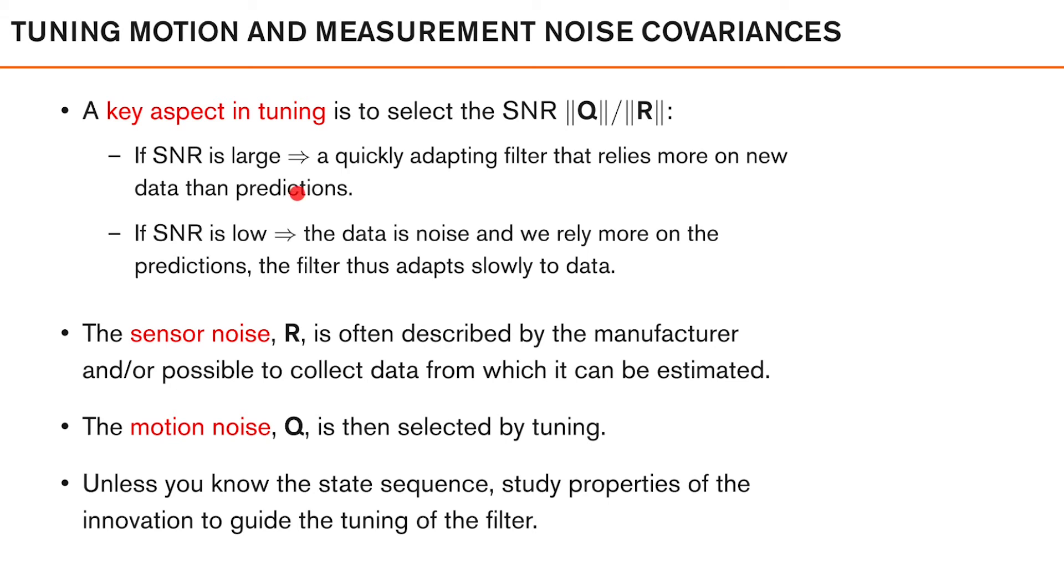And if, on the other hand, SNR is low, that is we have more measurement noise than process noise, the filter will perceive the data to be noisy and that we rely more on the predictions. And as we saw in the toy example, the filter will react slowly to new data.